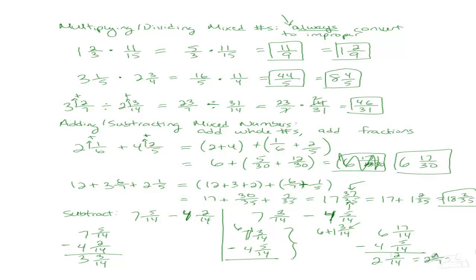I can reduce 12 over 14 — dividing both by 2 gives 6 over 7. So the answer is 2 and 6 over 7.